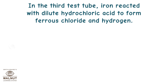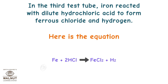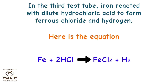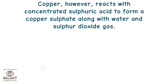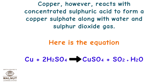In the third test tube, iron reacted with dilute hydrochloric acid to form ferrous chloride and hydrogen: Fe + 2HCl → FeCl₂ + H₂. In the fourth test tube, copper does not react with hydrochloric acid at all. However, copper reacts with concentrated sulfuric acid to form copper sulfate along with water and sulfur dioxide gas: Cu + 2H₂SO₄ → CuSO₄ + SO₂ + H₂O.